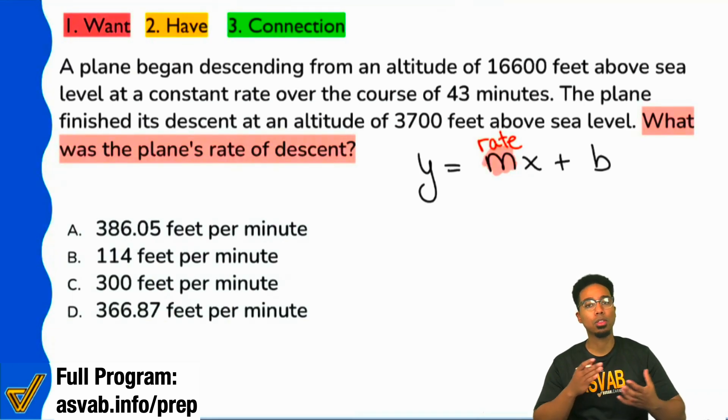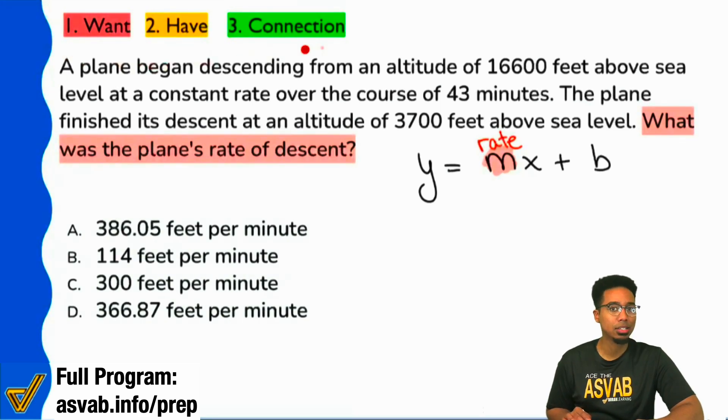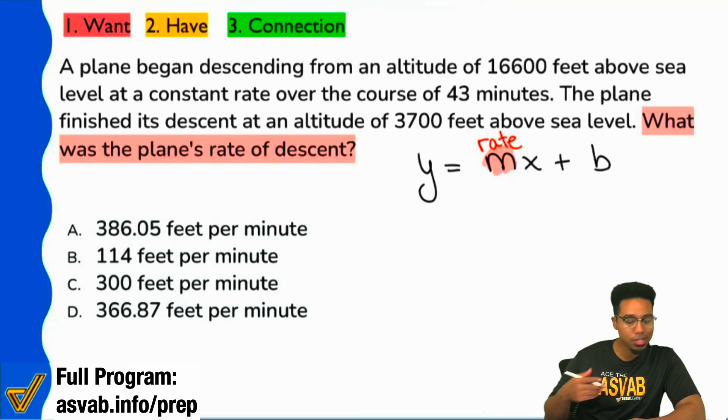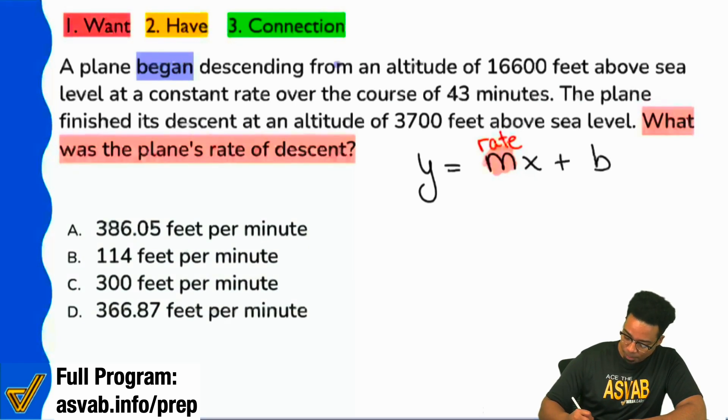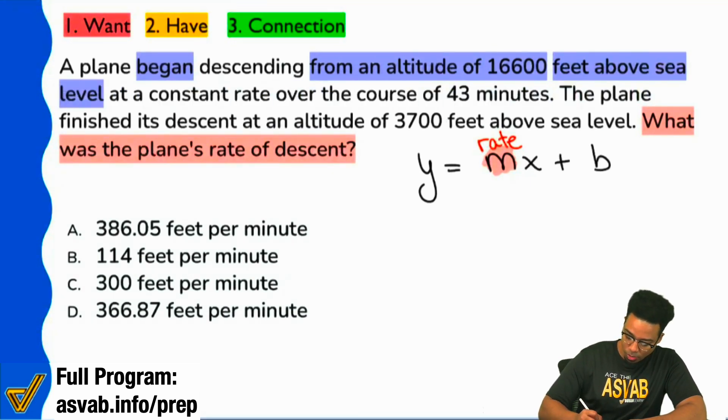Now, let's go ahead and see what other pieces of information we have. Right over here, it says a plane began descending. What do you think is going to come in this sentence when you see the words a plane began? Yeah, the beginning amount, B, for sure. A plane began descending from this altitude. So they tell you where we were at the start, the beginning amount. Began descending from an altitude 16,600 feet above sea level. So, that's what I'll write right over here.